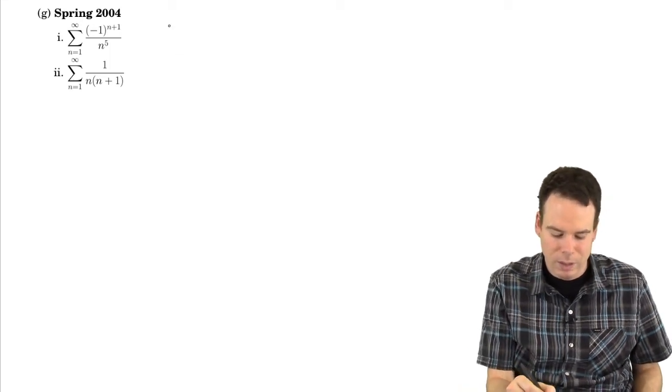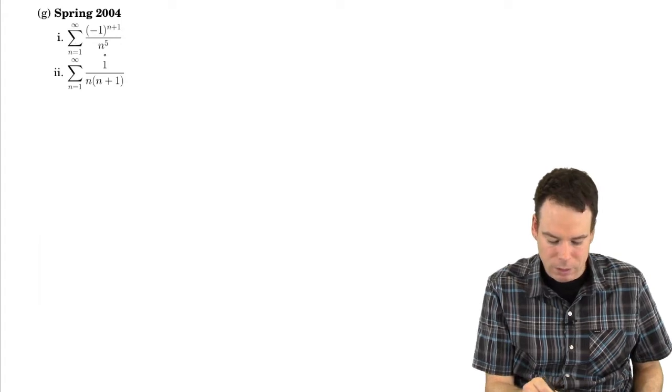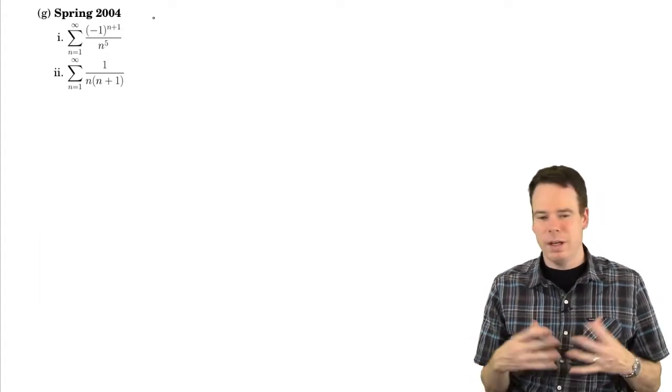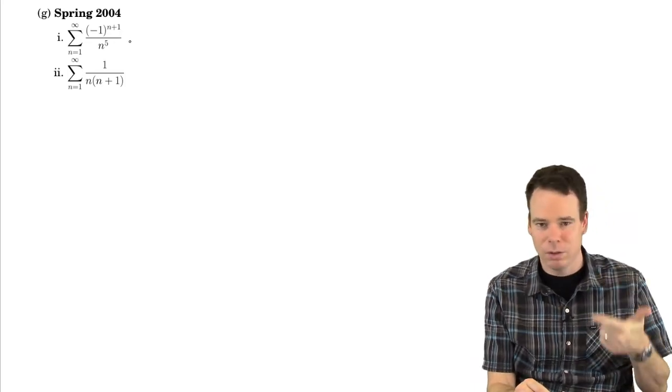Okay, let's have a look at these next two examples. I'm going to be really brief. It's an alternating series, the terms are going to zero, so we get that this thing converges just from the alternating series test.